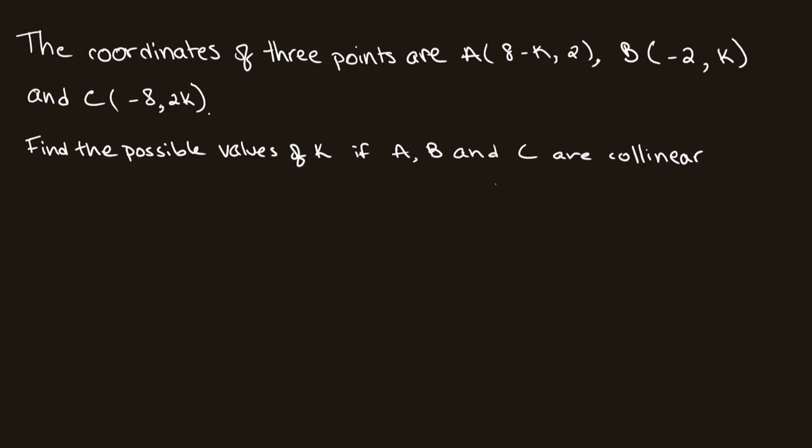B(-2k) and C(-8, 2k). We have to find the possible values of k if A, B, and C are collinear. Collinear essentially means that A, B, and C will be on the same line.